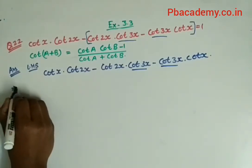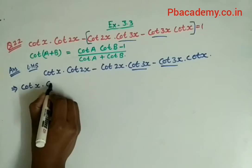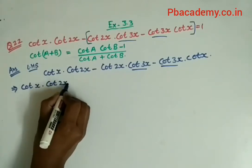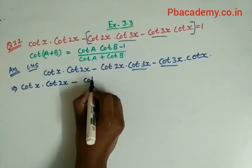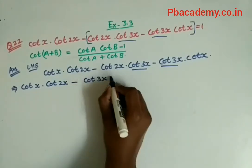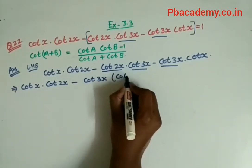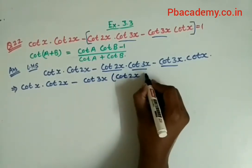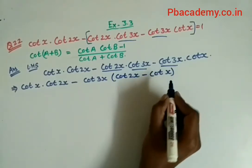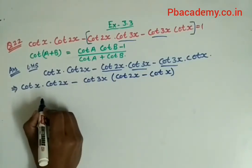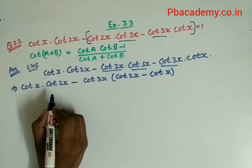It will remain cot x · cot 2x as it is. Here I will take cot 3x common, so cot 3x (cot 2x - cot x).